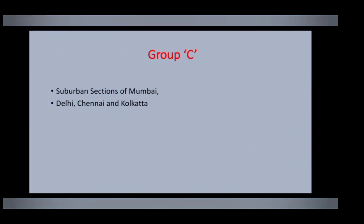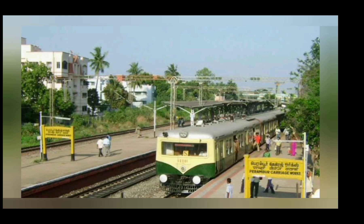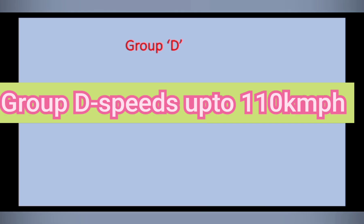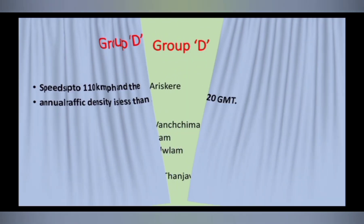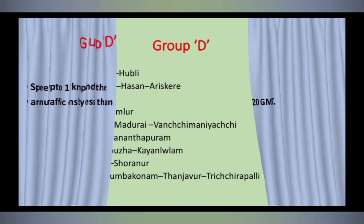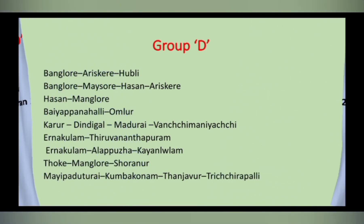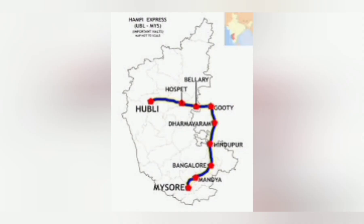Group C lines are all suburban sections of Mumbai, Delhi, Chennai, and Kolkata. Finally, the earlier Group D Special and Group E routes are combined as Group D routes only, with maximum permissible speeds up to 110 kmph. In the south region, the Bangalore–Hubli, Bangalore–Mysore, and Hassan–Bangalore routes are Group B routes.